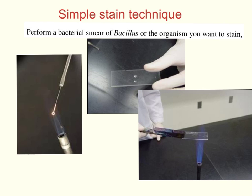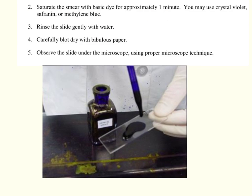First, prepare a bacteria smear of your specimen — whether it's Bacillus, Staphylococcus, or another organism — just as discussed in previous videos. After you have fixed your slide, simply saturate your smear with a basic dye. This dye can be crystal violet, Safranin, or methylene blue. Saturate it and let it sit for about a minute.